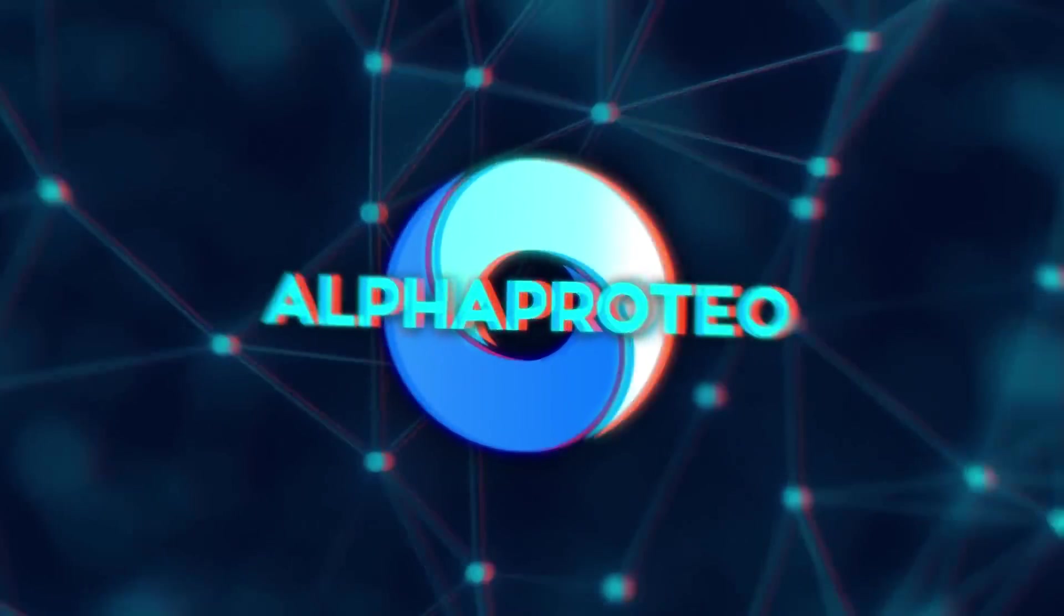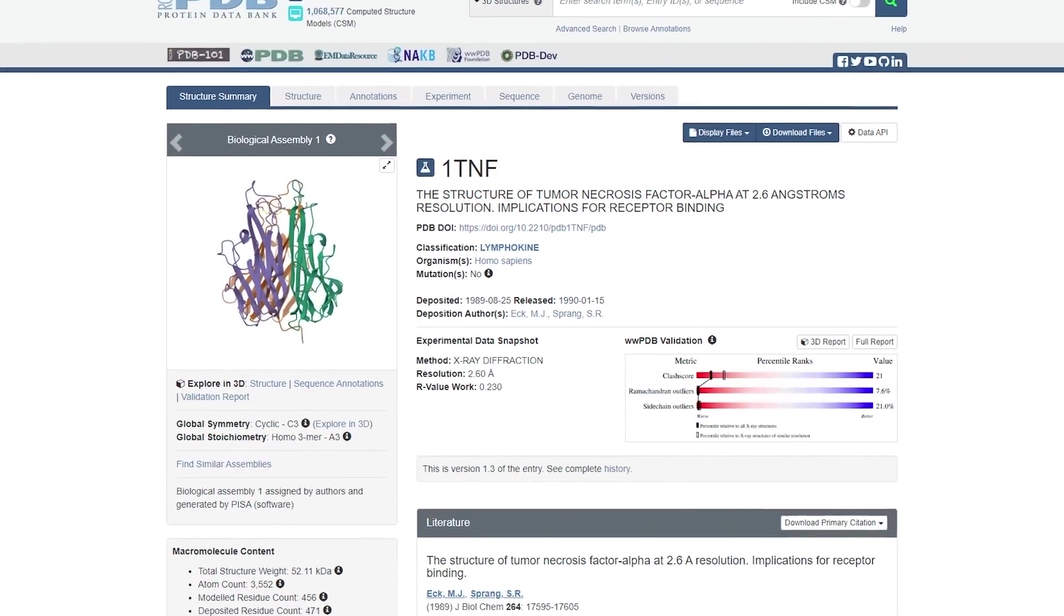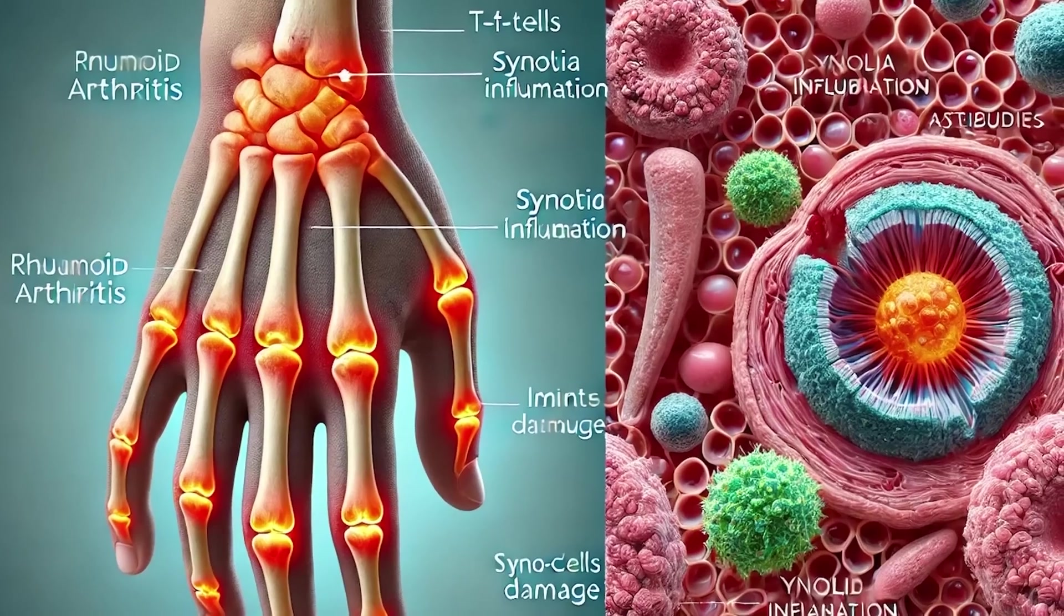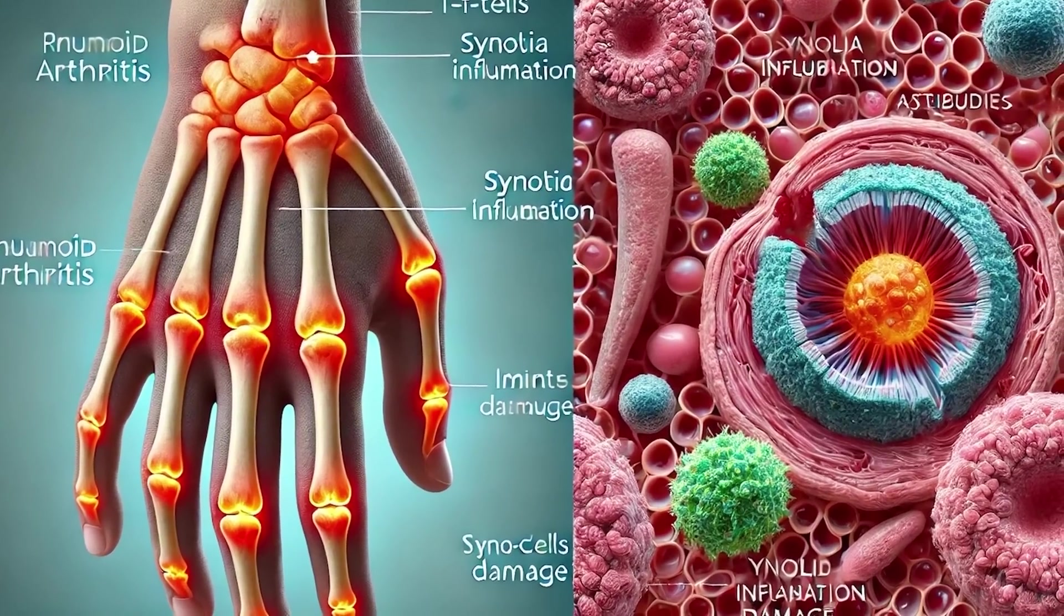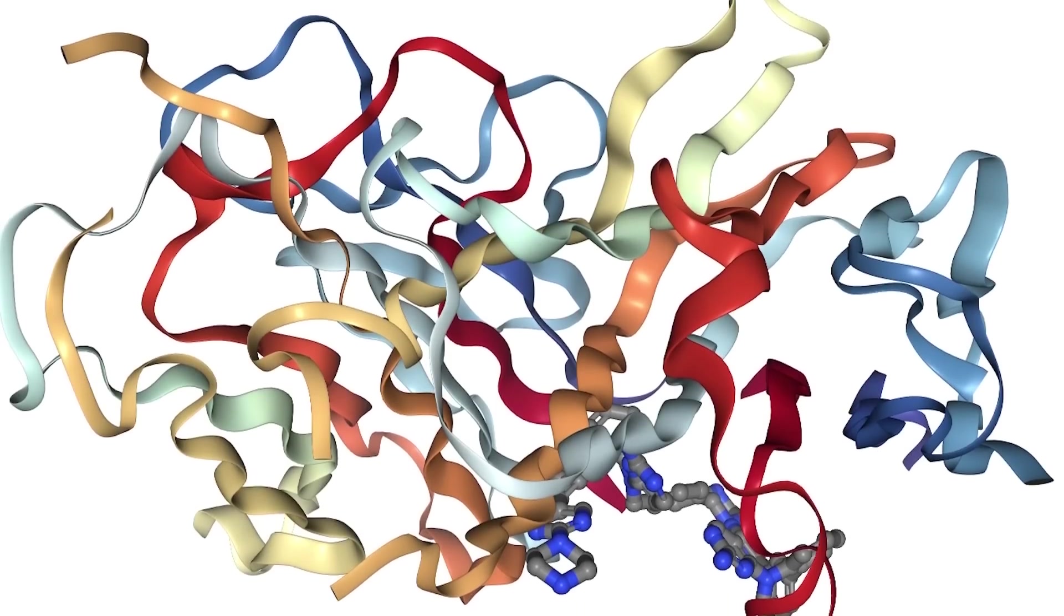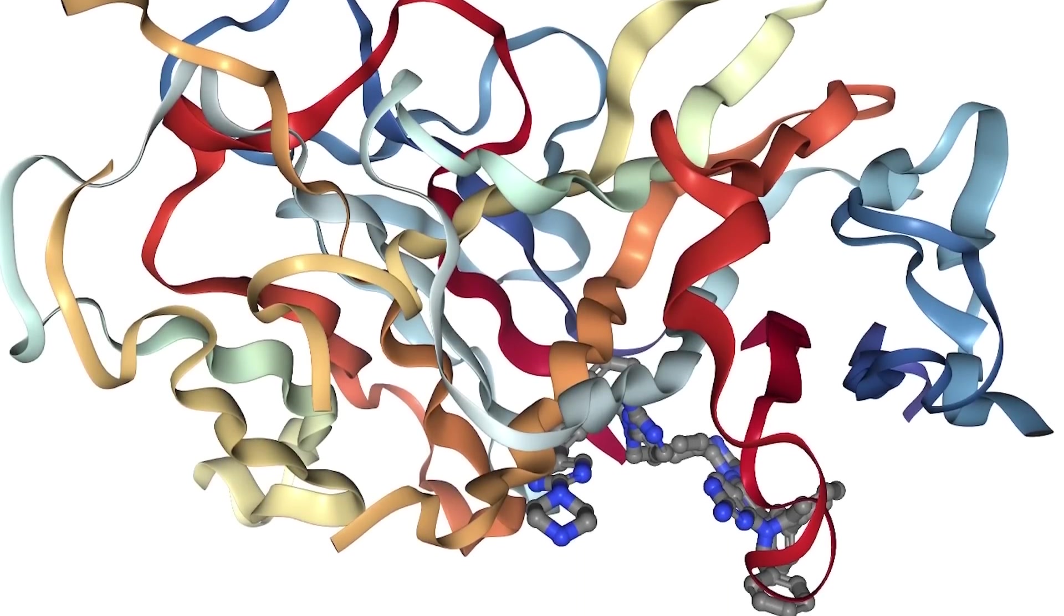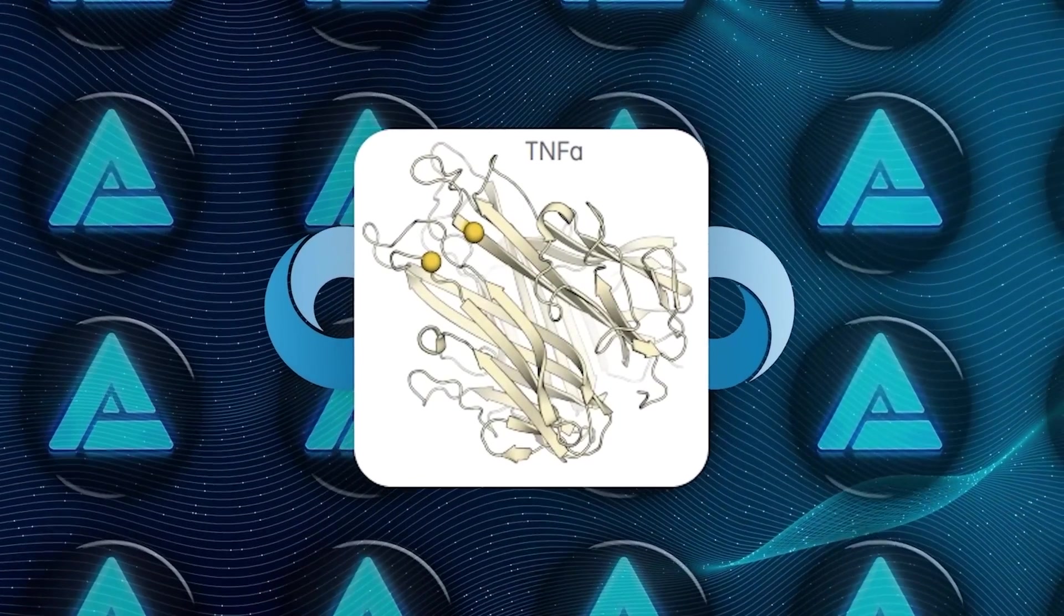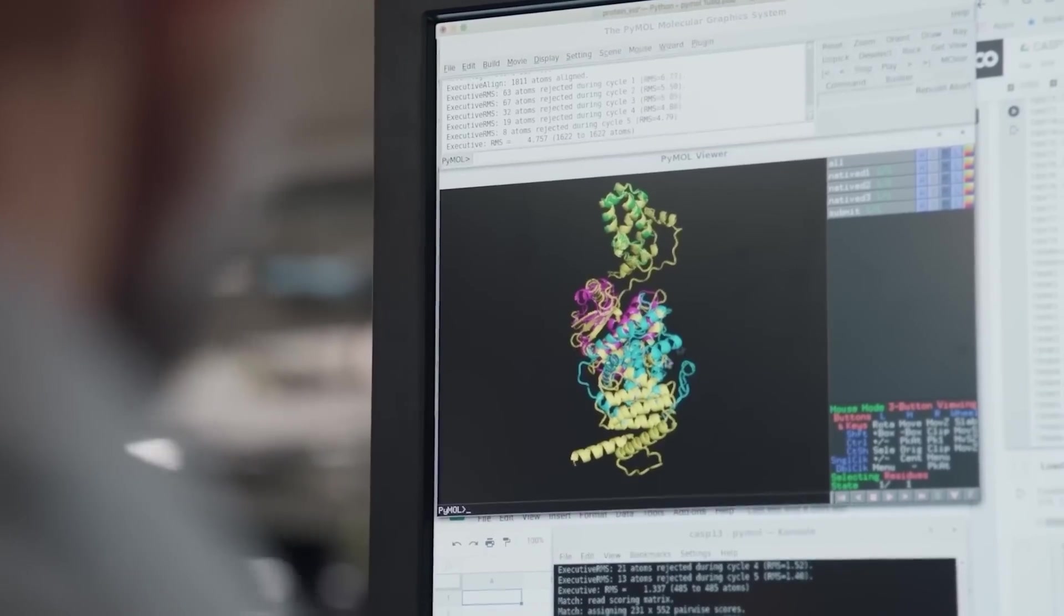Now, obviously this tech isn't perfect yet. For example, AlphaProteo couldn't design a successful binder for TNFA, which is a protein associated with autoimmune diseases like rheumatoid arthritis. But to be fair, TNFA is known to be a beast in terms of difficulty. The team picked it on purpose to test the limits of the system. So it's not all bad news. In fact, it's a sign that they're pushing the system to improve.